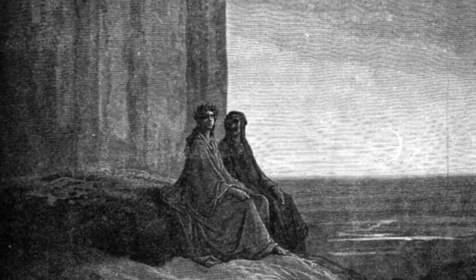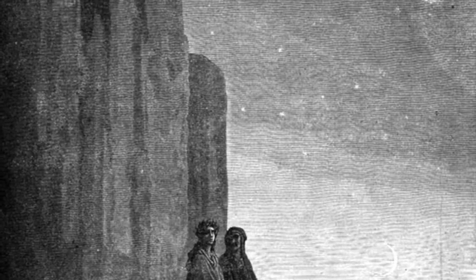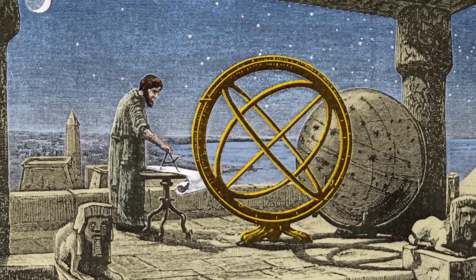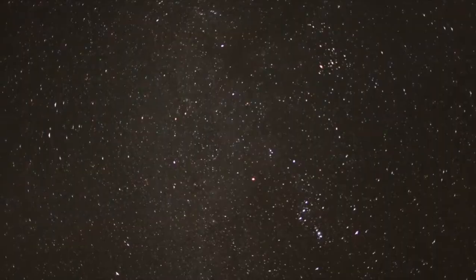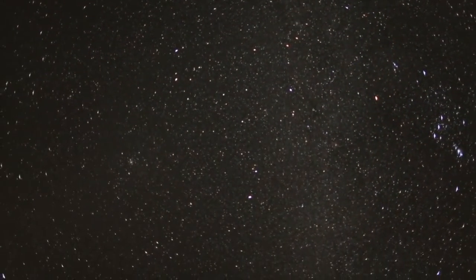Ovviamente Dante non vide mai la croce del sud, ma egli sapeva, come gli uomini eruditi del suo tempo, che a causa del fenomeno della precessione degli equinozi, scoperto dai Parco Danicea nel secondo secolo prima di Cristo, le stelle si muovono in cielo cambiando, su tempi scala molto lunghi, la loro posizione.